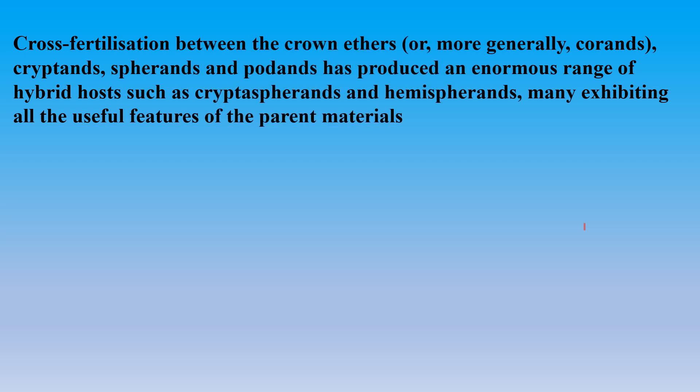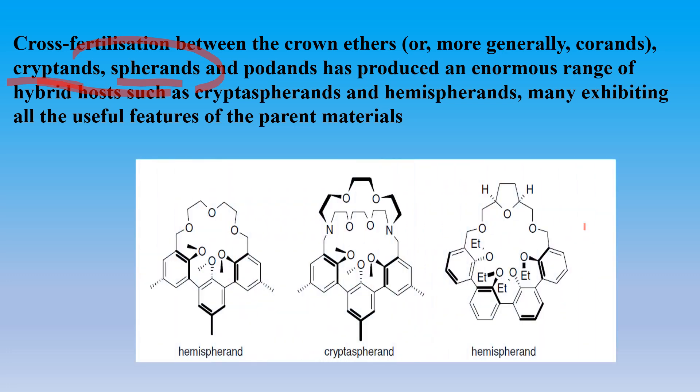Cross-fertilization — that is, mixing crown ethers, cryptands, spherands, and podands — has also produced hybrid hosts like cryptospherands and hemispherands. These hybrids exhibit many of the properties that their parent molecules individually possess. For example, cryptands may have certain properties and spherands may have others; when combined, the resulting compound possesses the properties of both. Hemispherands and cryptospherands have been prepared and show excellent cation-binding abilities. With this, we are completing the topic of spherands. Thank you, and we can meet in another video lecture.